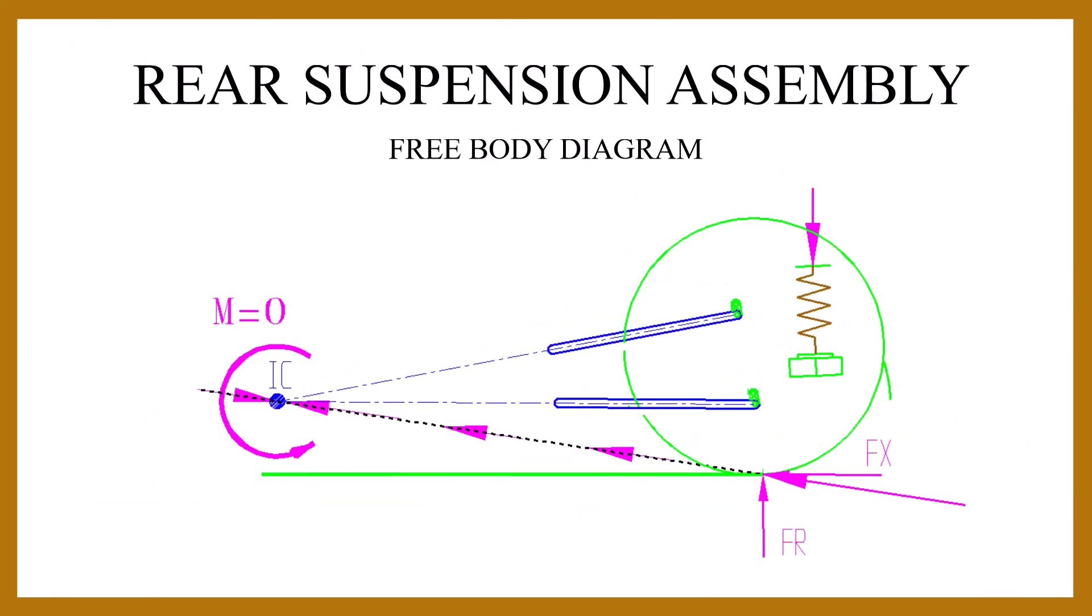Here's a free body diagram of the rear axle and the 4-bar assembly. It shows how the vector goes to the instant center and results in no moment or torque about the instant center. This means there's no reaction forces at the front or rear springs. 100% of the hit goes through the 4-bar linkage.